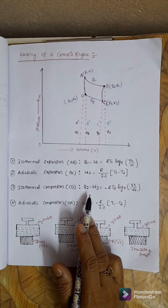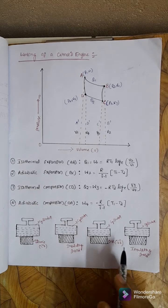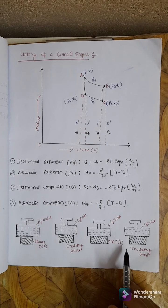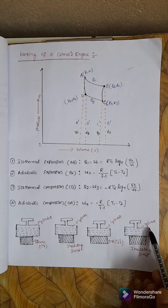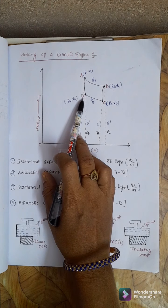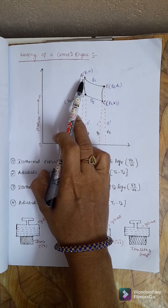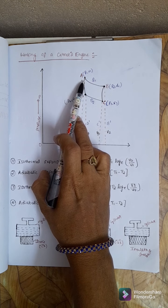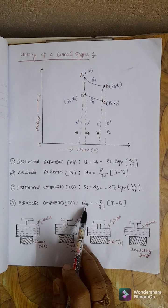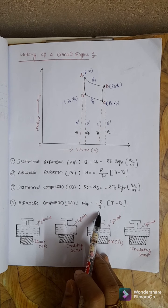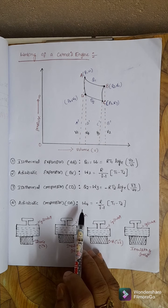For adiabatic compression, the cylinder is placed back on the insulating stand. The gas undergoes a very slow adiabatic compression from D to A, reaching its original state at point A. The work done in adiabatic compression from D to A is W4 = −R/(γ−1) · (T1 − T2).